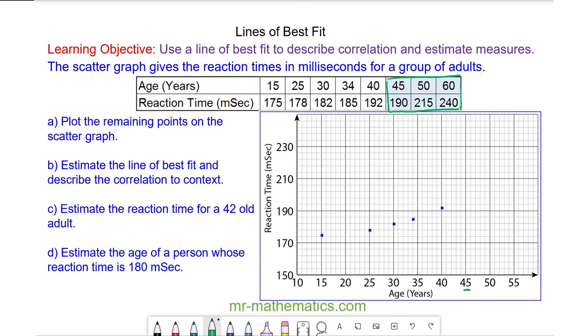Our first point is at 45 and 190, which is 45 across and 190 up. Then we have 50 and 215, and finally 60 and 240. So these are the remaining points.